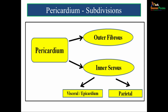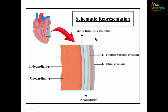The pericardium is subdivided into an outer fibrous layer and an inner serous layer. The inner serous layer is further subdivided into visceral pericardium or epicardium and a parietal pericardium. This picture gives you a schematic representation of the layers of the pericardium. Here you can see the outermost layer — that is the fibrous pericardium — then the two layers of the serous pericardium: the inner visceral layer and the outer parietal layer.